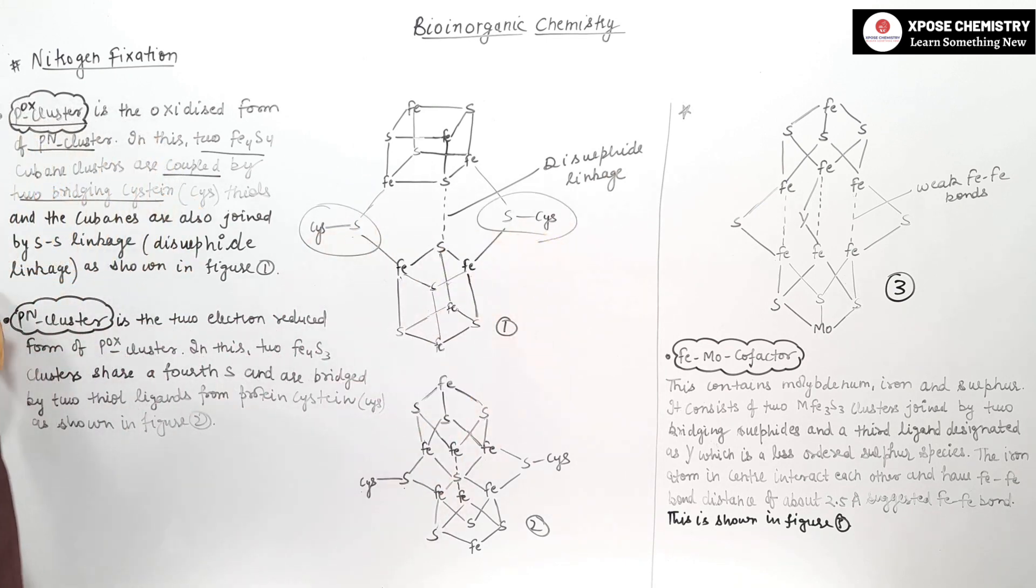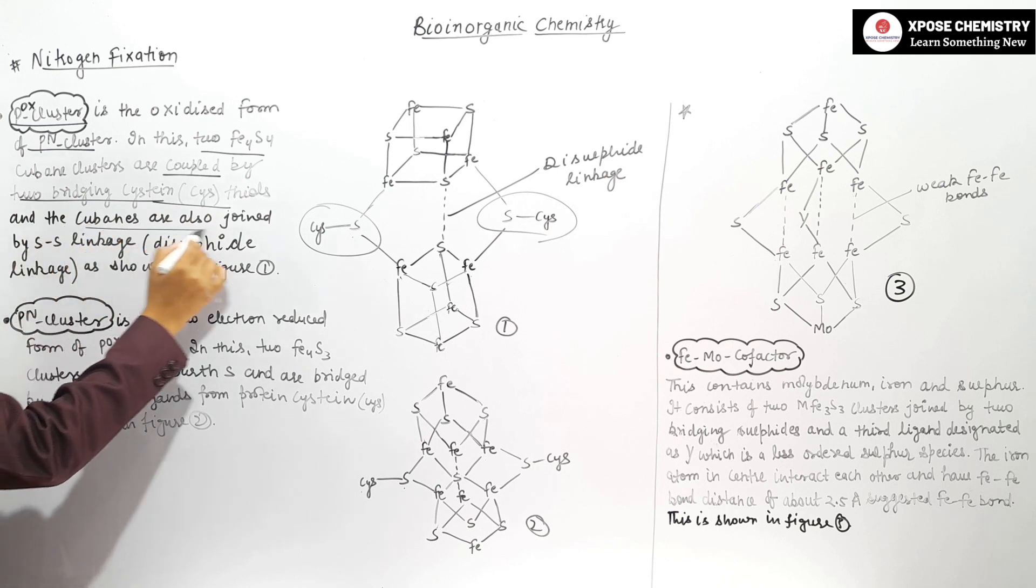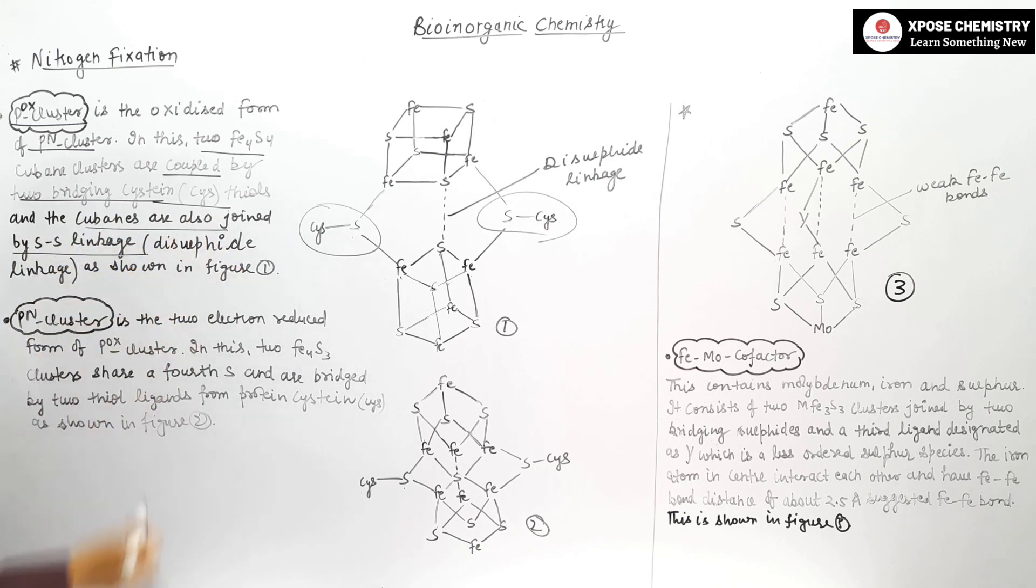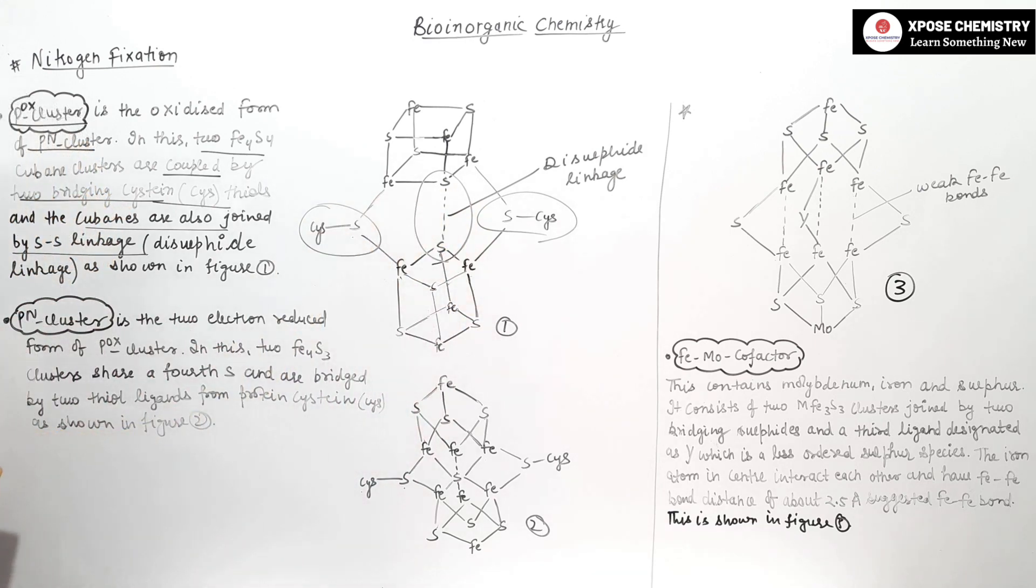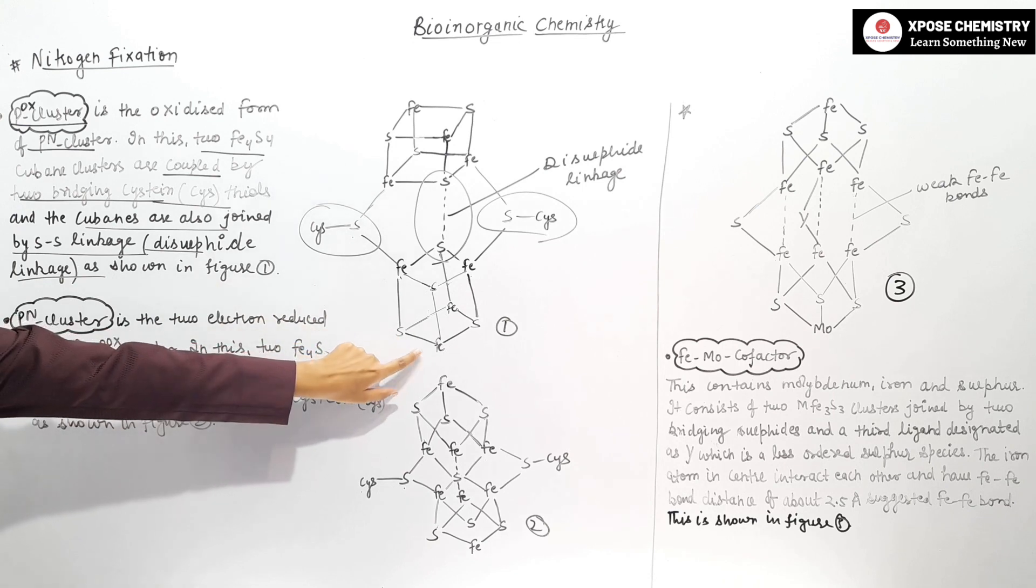The cubane clusters are coupled by 2 bridging cysteine thiols, and they are also joined by disulfide linkage, as shown in figure.